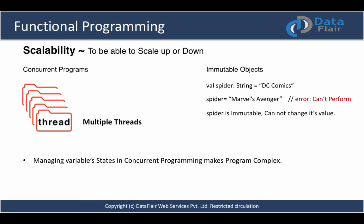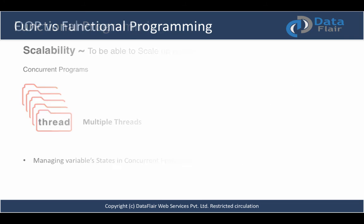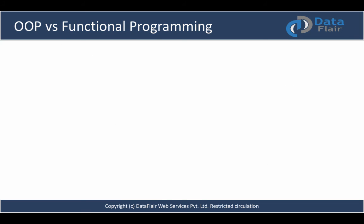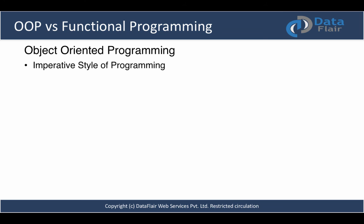Now we'll talk about the last topic for this lecture: how functional programming is different from the object-oriented world. Object-oriented programming provides a nice way to construct abstractions and provides encapsulation in the form of classes. You repeat these constructs, get copies of them called objects, use them with some logic, and get things done. That's how we do it in the object-oriented world.